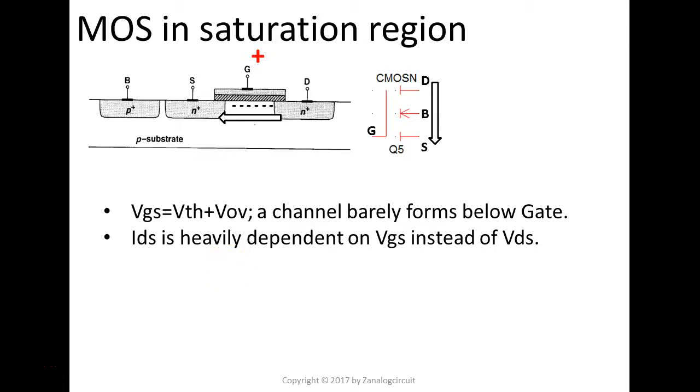In the other video, we talked about the MOS transistor used as a switch. Here, let's take a look at how MOS transistor operates in saturation region. In saturation region, VGS of, again, we use NMOS as an example here.